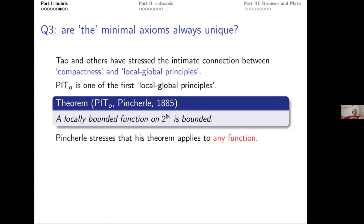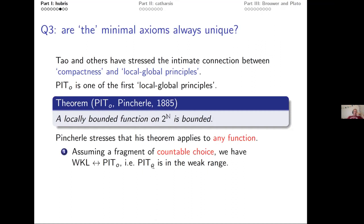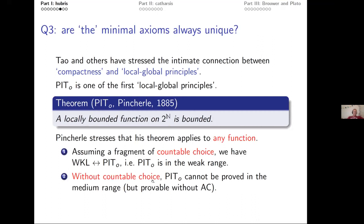Pincherle stresses he wants to talk about any function — not just continuous ones, since Riemann had already introduced discontinuous functions into the mainstream following the study of Fourier series. If we assume a fragment of countable choice — not provable in ZF — then Pincherle's theorem is equivalent to WKL. WKL expresses countable compactness of Cantor space, and Pincherle's theorem is a local-global principle: assuming that fragment of countable choice, the two are equivalent.